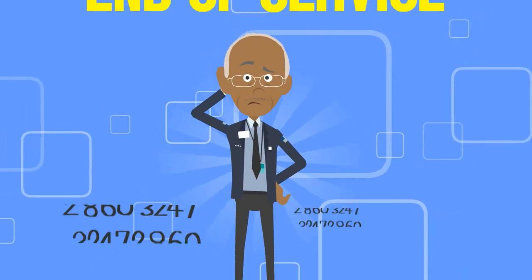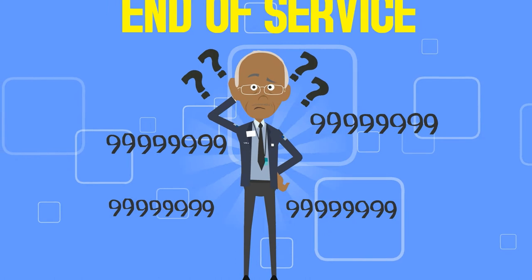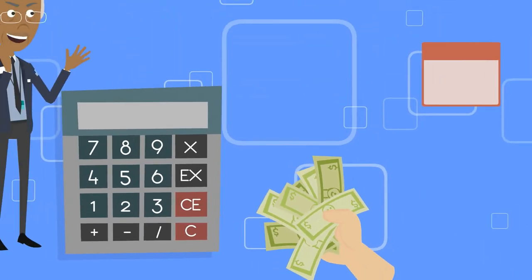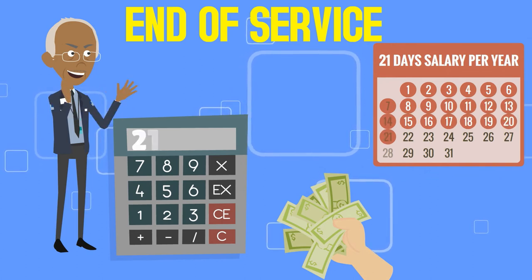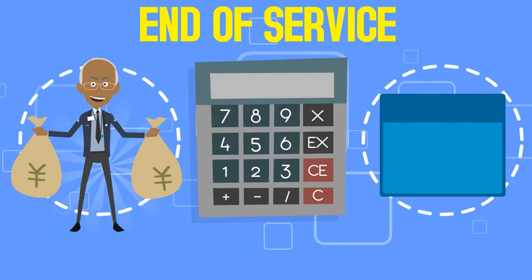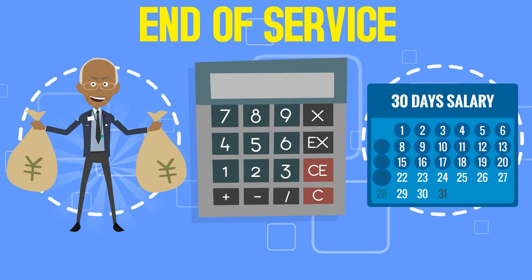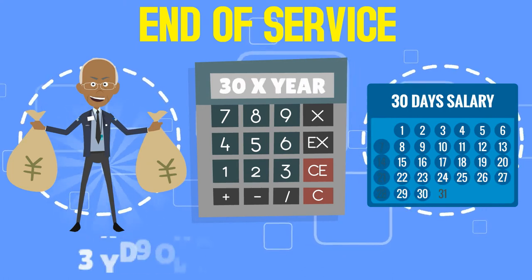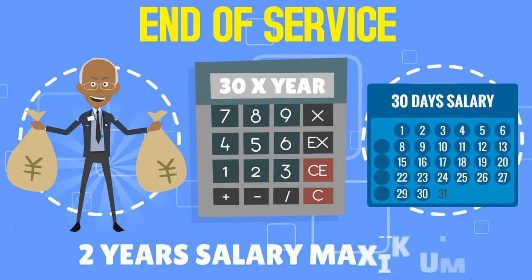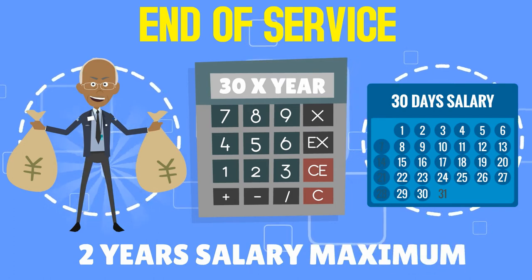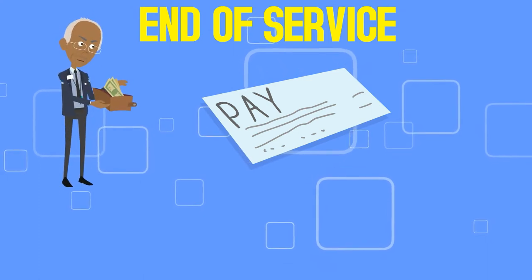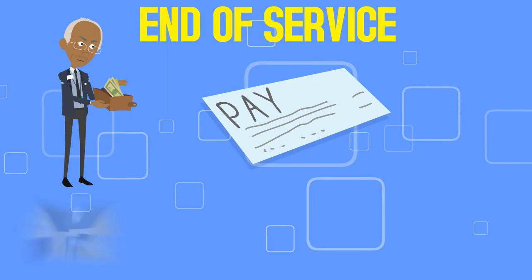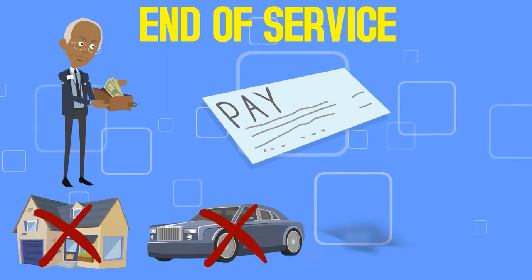Now let's see how this amount is calculated. The end-of-service amount equals 21 days' salary for each of the first five years at work, and 30 days' salary for each year of employment afterwards. However, the total end-of-service amount cannot exceed the equivalent of two years' salary. The term 'salary' means the last monetary wage paid to the employee, which does not include any allowances such as housing, transport, education, or overtime.